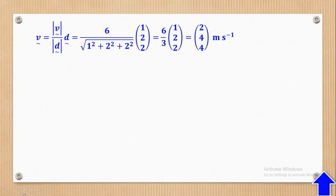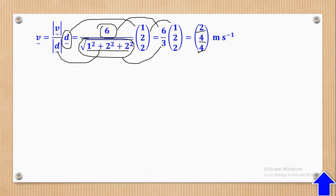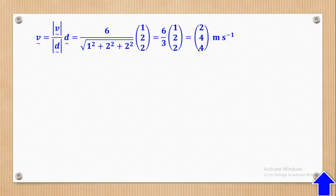The speed is 6 meters per second and the direction vector is (1, 2, 2), so the magnitude will be the square root of 1 squared plus 2 squared plus 2 squared, which simplifies to 3. Therefore 6 over 3 is 2, and multiplying: 2 times 1 gives 2, 2 times 2 gives 4, 2 times 2 gives 4. So the velocity vector is (2, 4, 4), and we've now converted from magnitude to vector form.